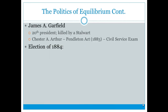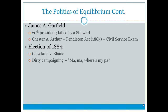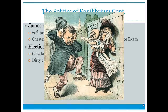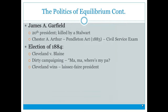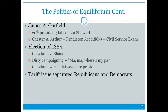In 1884, the presidential election of Grover Cleveland versus James Blaine was highly contested with lots of mudslinging. The Blaine campaign used the slogan 'Mama, where's my pa?' because of allegations that Cleveland fathered a child out of wedlock. Cleveland wins and was a laissez-faire president who didn't believe the government should intervene in the economy. The tariff issue became the main separator between Republicans and Democrats.